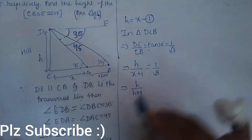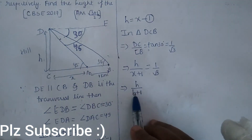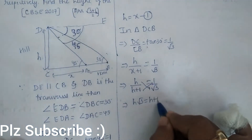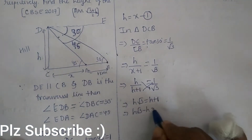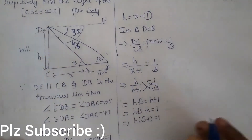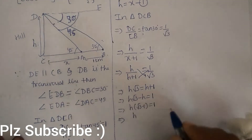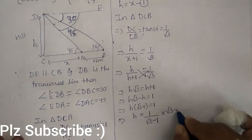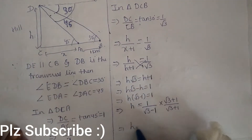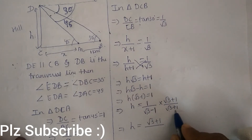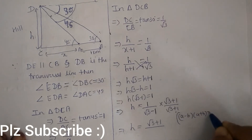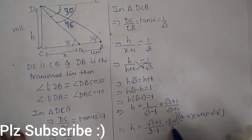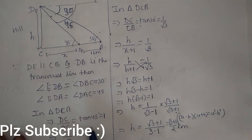Since h equals x from equation number one, we replace x with h, giving h upon h plus one equals one by root three. Cross-multiplying: h root three equals h plus one, so h root three minus h equals 1, meaning h times (root three minus 1) equals 1. Therefore h equals 1 upon (root three minus 1). Rationalizing by multiplying by (root three plus 1) over (root three plus 1), we get h equals (root three plus 1) divided by (3 minus 1), which gives the final answer: h equals (root three plus 1) divided by 2 kilometers.